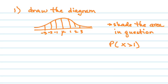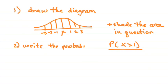The second step is to write the probability statement. This is a big deal. If you do not write the probability statement, no matter what other numbers you get right, you will not get the question right. So you have to be able to write the probability statement for an event.